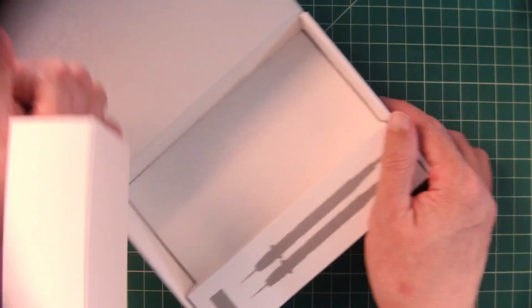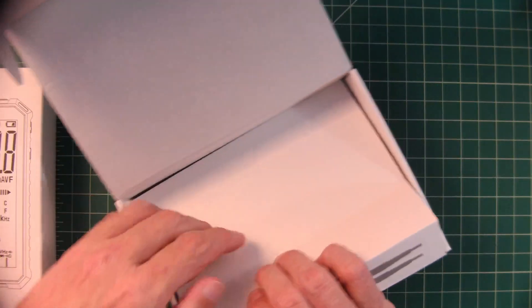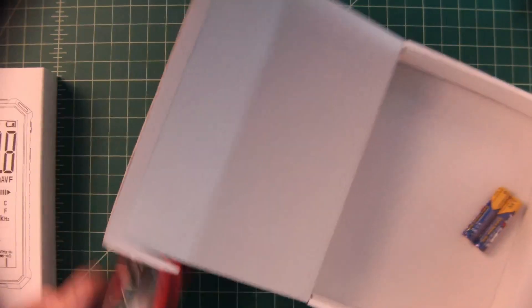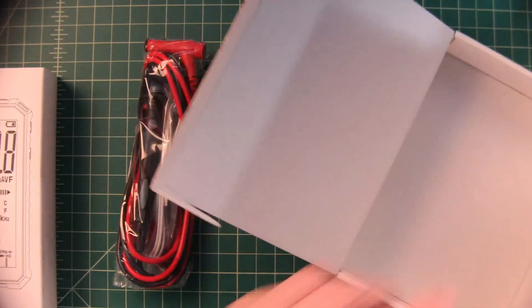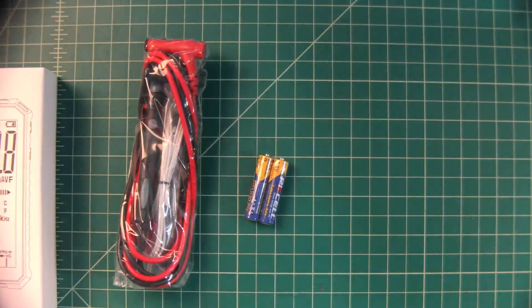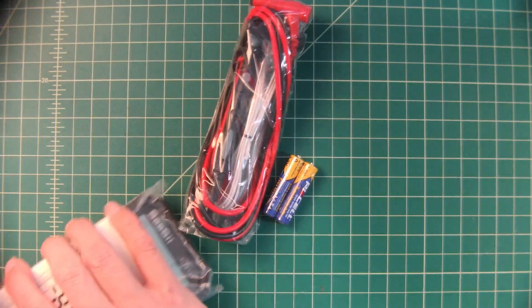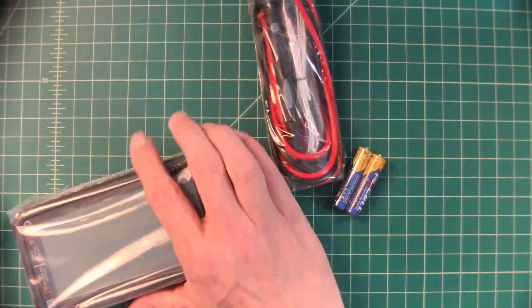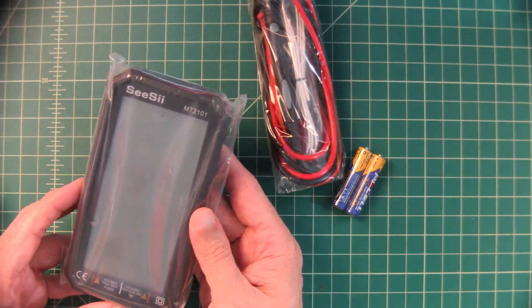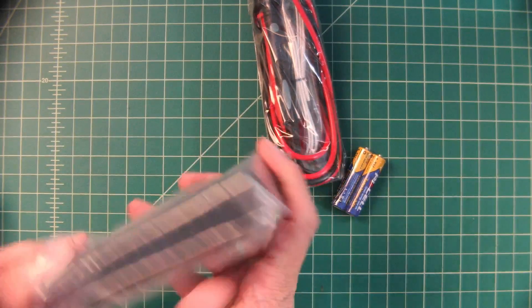Hopefully I'm going to be able to figure out how to get this thing out of here. Everything seems to be packaged up pretty well. Here is a bag full of probes and such and we got some batteries which is nice. Here is the multimeter itself and it is wrapped in a plastic bag which is probably something that you would expect.